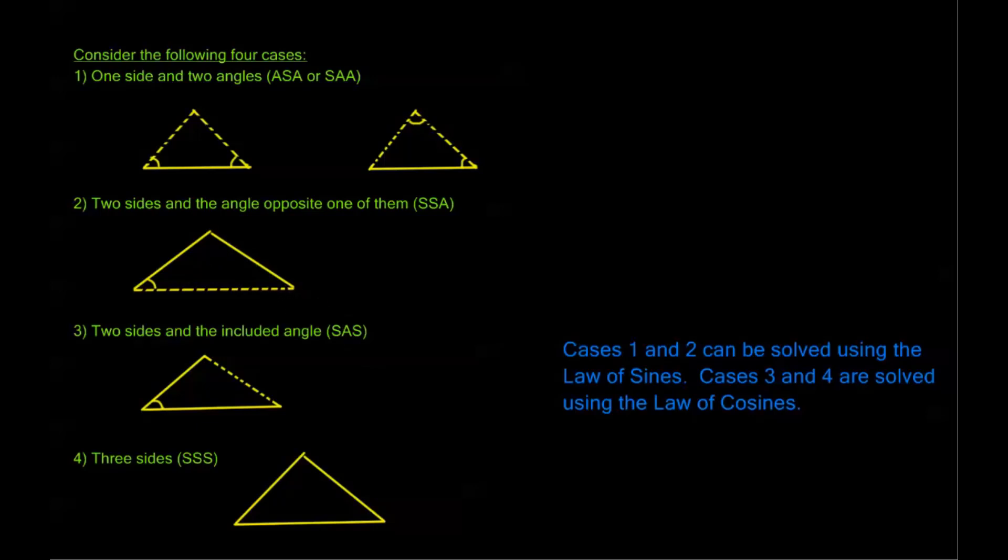So when you're given a problem, to identify if law of sines is possible, all you need to find out is if you have an angle and its corresponding side, or in other words, you have an angle and you have the side opposite that angle. Now let's take a look at a couple of examples. In this video, we're going to cover ASA and SAA, and in the next video, we're going to cover case 2, where we have SSA.